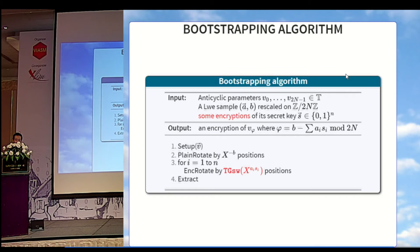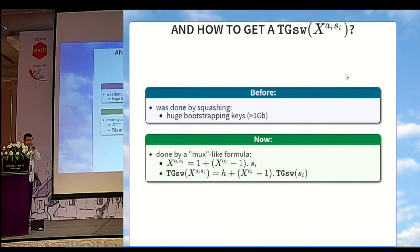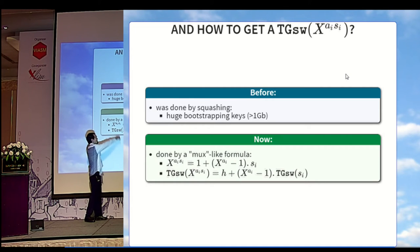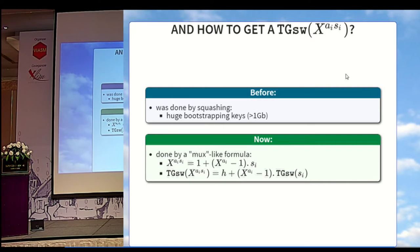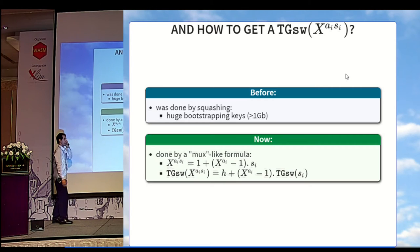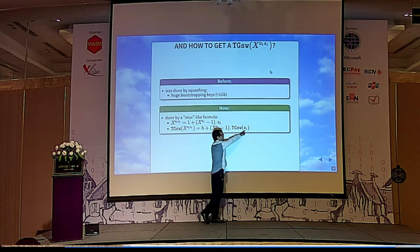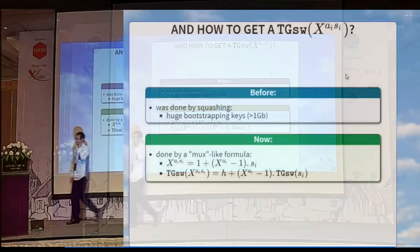The final bootstrapping algorithm: given 2n parameters and the input sample, you basically want to compute an encryption of v_phi where phi is the phase of the sample. You set up the wheel, rotate it by -phi positions, and extract whatever falls in zero. The rotation by -phi is divided into a public rotation by -b positions, followed by n rotations by a_i · x_i positions. Since you don't know x_i, you do it over an encryption. How do we get an encryption of x^{s_i · a_i}? Before, this was done by squashing, which required a huge bootstrapping key larger than 1 gigabit. Now, we do it with a MUX-like formula, which you can verify for both values 0 and 1 of x_i. Since the formula is linear, you can encrypt them with GSW. The only thing needed for the bootstrapping key is an encryption of the bits of the secret key.